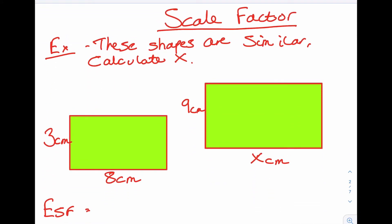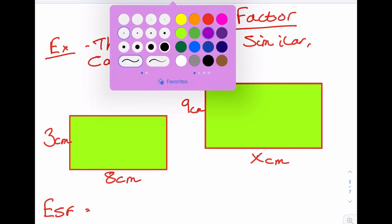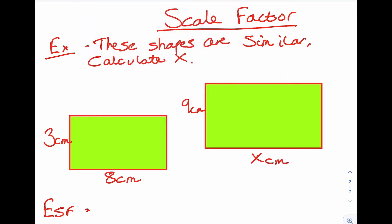So scale factor example. These shapes are similar. Calculate X. Your first step is always the same. You're going to calculate what's called the scale factor. So if we look first of all for two sides which are the same, there's one and there's one there. The scale factor is just the ratio of the sides.